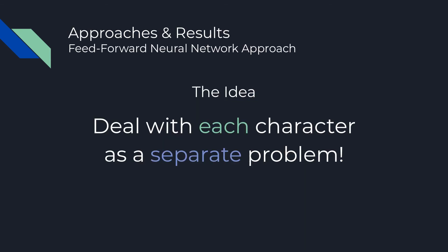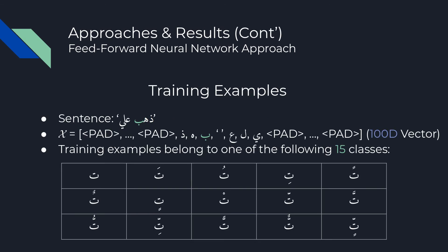The idea with our first approach was to consider each character individually as a separate problem, and try to find its best diacritization based on information from preceding and following characters using feed-forward neural networks. Each character is converted to a 100-dimensional vector representing the character itself and the surrounding information. Each character belongs to one of 15 classes.